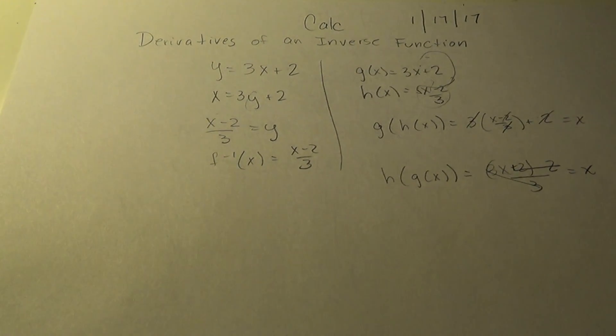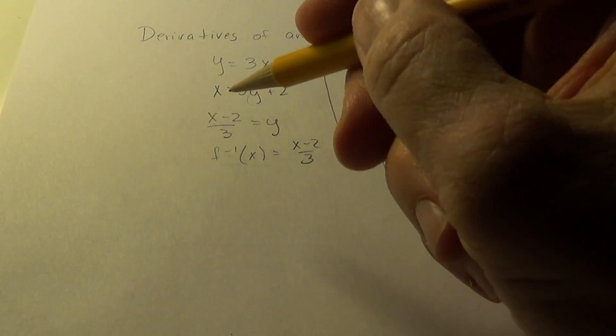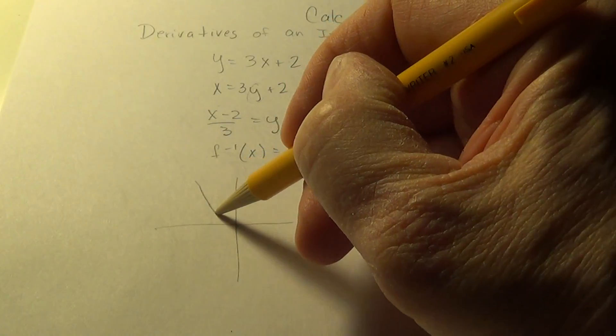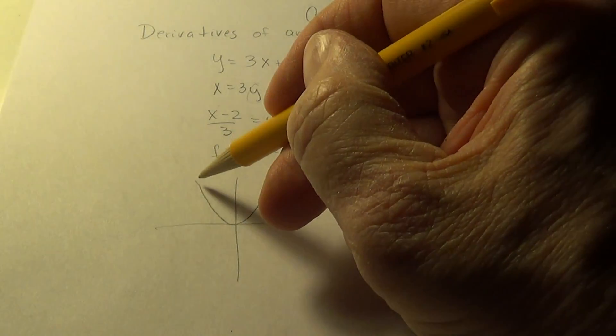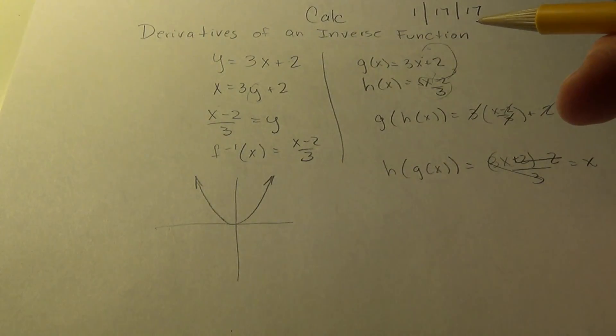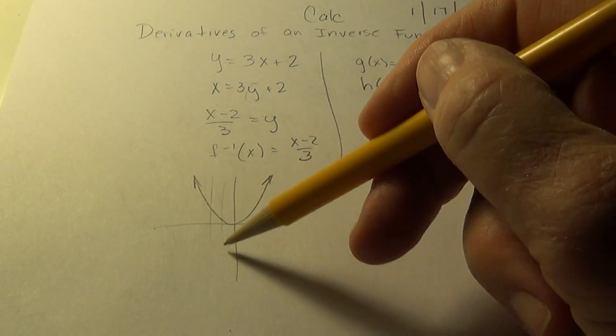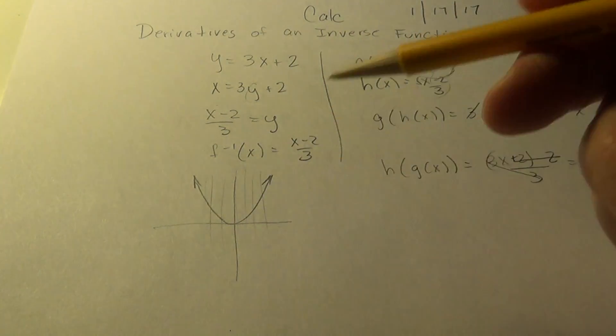And we learned that not every function has an inverse. And here's an example. Say we have the smiler, the parabola. We can look at the graph and see that it is a function and that it passes the vertical line test.